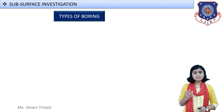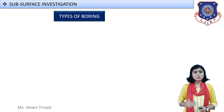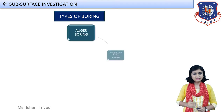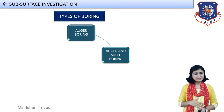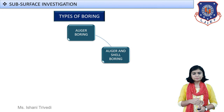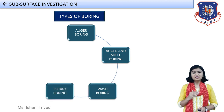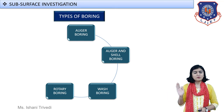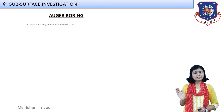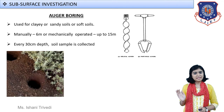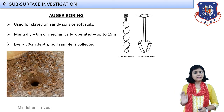We had talked about the subsurface investigation method known as boring. Let us quickly get back to the methods and move further with the boring methods we left behind. Only two types of boring are left, and then we shall start with the shallow foundation. A quick revision with the flowchart: the different types of boring are auger boring, auger and shell boring, wash boring, rotary boring, and percussion boring. Auger boring was already discussed — let us have a quick glance to refresh.